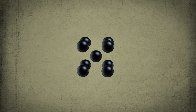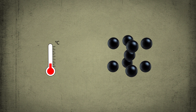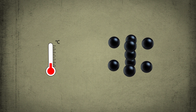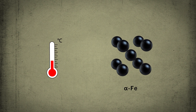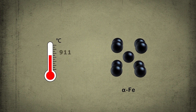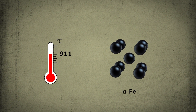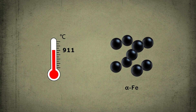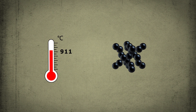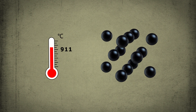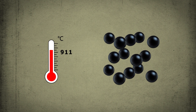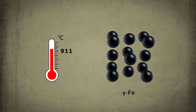Iron, for example, has a body-centered cubic crystal structure at low temperatures. This structure is called alpha iron. However, at a temperature above 911 centigrade degrees, the atoms rearrange to form a face-centered cubic crystal structure. This modification is called gamma iron.